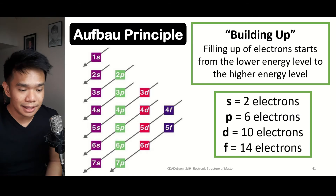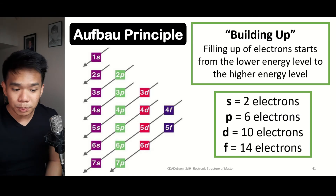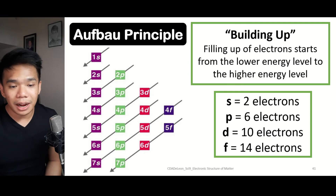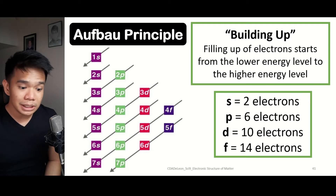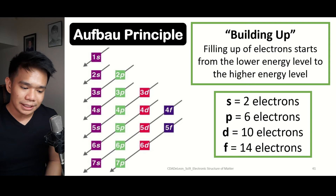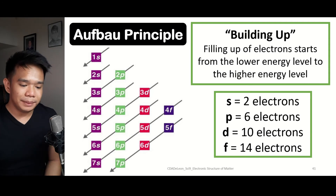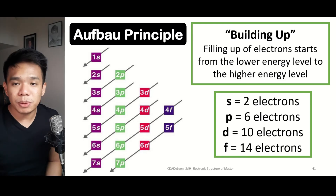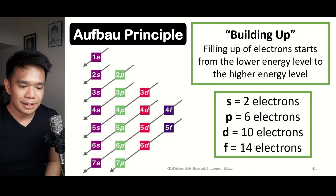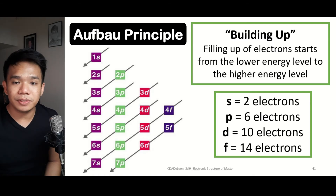The Aufbau principle order goes: 1S, 2S, 2P, 3S, 3P, 4S, 3D, 4P, 5S, 4D, 5P, 6S, 4F, 5D, 6P, 7S, 5F, 6D, and 7P. This is represented within the arrow lines. As long as you know where the end and start of each arrow is, you will not have a difficult time following this order.